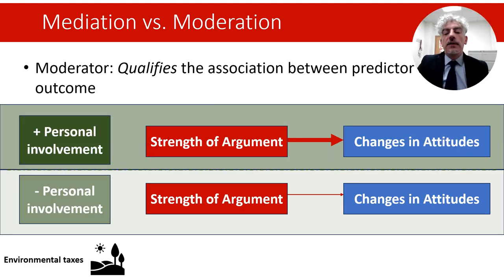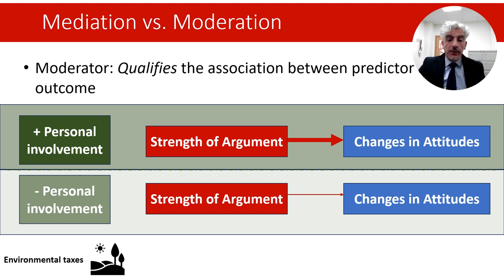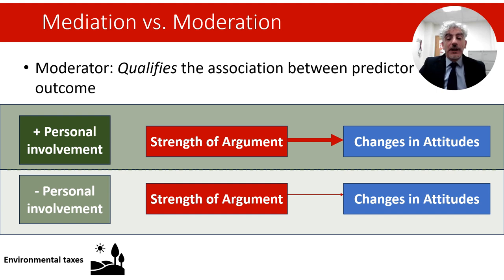So in this example, the situation may take this form. Personal involvement varies from more or less, and depending on this, the person may be more responsive to strong arguments. If they are more involved, they will be more influenced by the strength of the argument. But people that are less engaged or involved with the policies may be less likely to change attitudes when they are presented with strong arguments. So in other words, the strength of the association between the predictor and the outcome — here represented by the red arrows — changes conditionally on the context, the moderator variable.